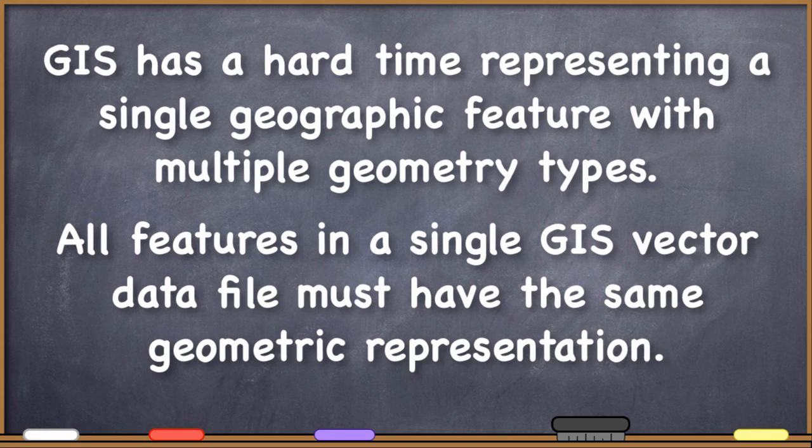One geometry type per data file. So when you're considering what type of representation that you want to use for any particular feature or phenomena that you're trying to represent in your GIS, you're going to have to choose one geometric representation, or you're going to have to use multiple vector data files to use a combination of geometry types. And that's an important thing to keep in mind.